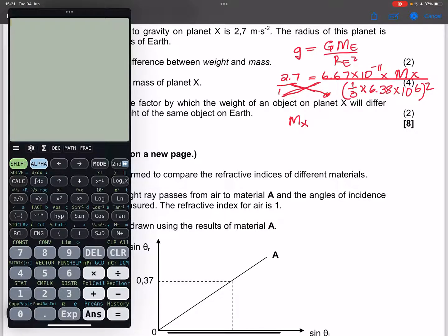What I'm going to do, I'm going to say, this is 2.7 multiplied by, this is 1 over 3 times 6.38 exponent 6. This is squared, all of it squared. And in this case we're going to take all of that and divide that by 6.67 exponent minus 11.